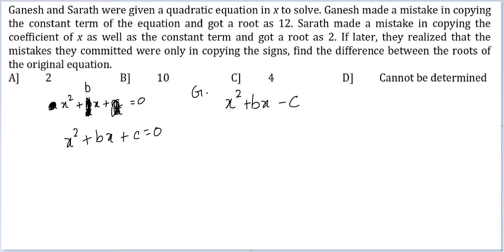And he got a root is 12. So if root is 12, so this should be 0. 144 plus 12b minus c should be equal to 0, or c minus 12b should be equal to 144. Seems nice.